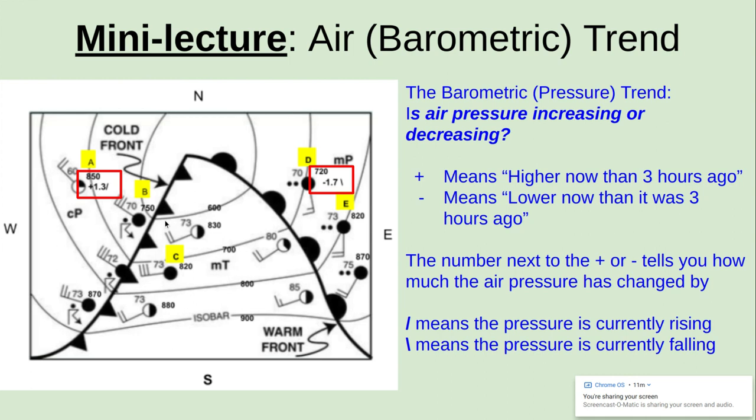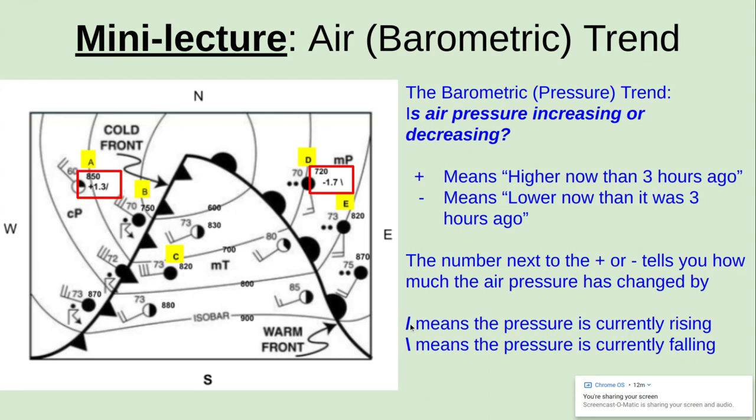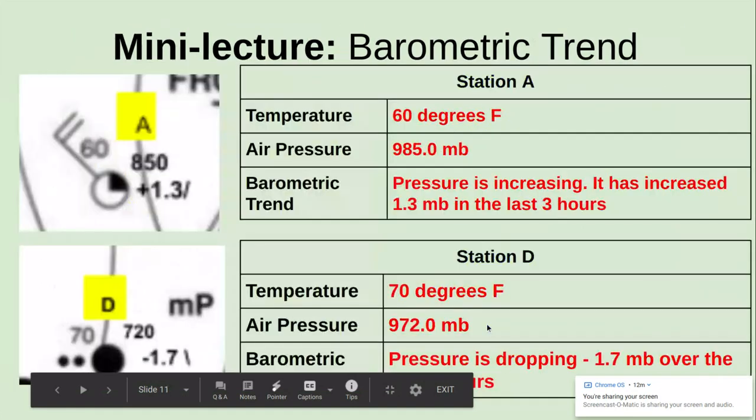So the plus sign means that the current air pressure, which is the number on top, so station A was 985. The current air pressure is higher than it was three hours ago. That means that air pressure has increased or risen. There's a negative sign here in front of that 13. That means that the current air pressure of 985 is lower now than it was three hours ago. So that's what the plus or minus in front of that two digit number means. The slant to the right, this little line here, means that air pressure is currently rising or getting higher. And then the slant in the opposite direction means that the pressure is falling.